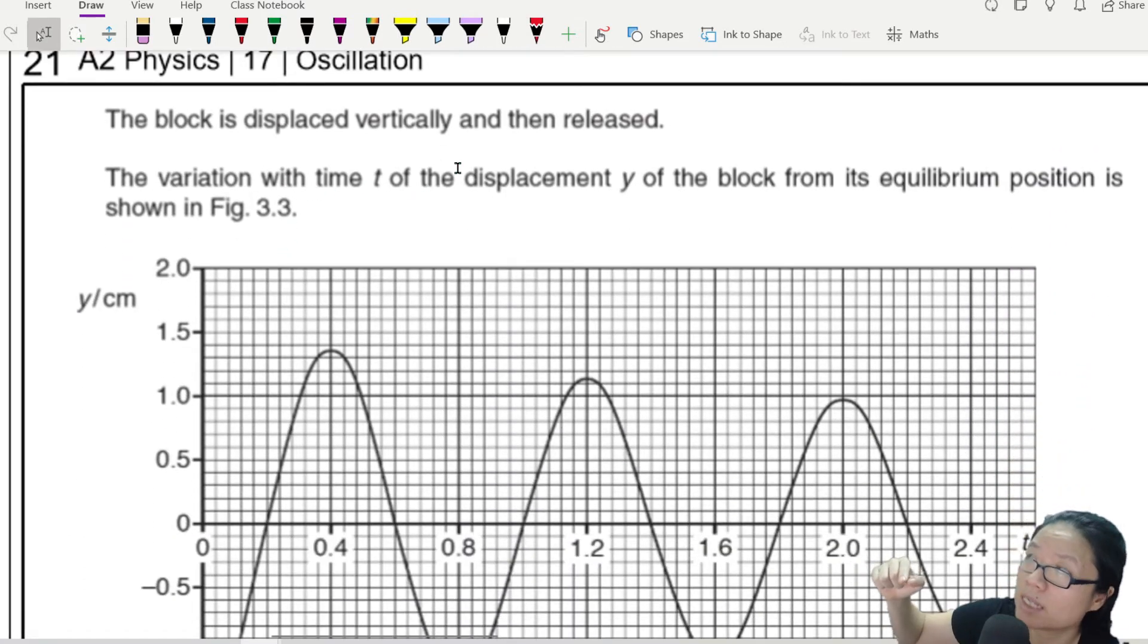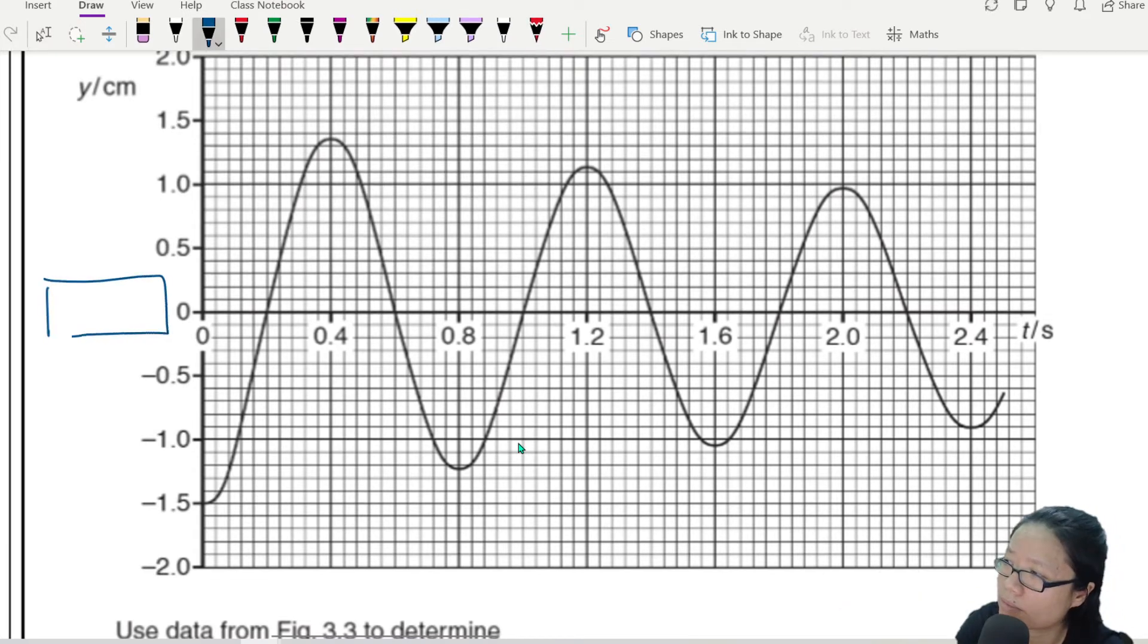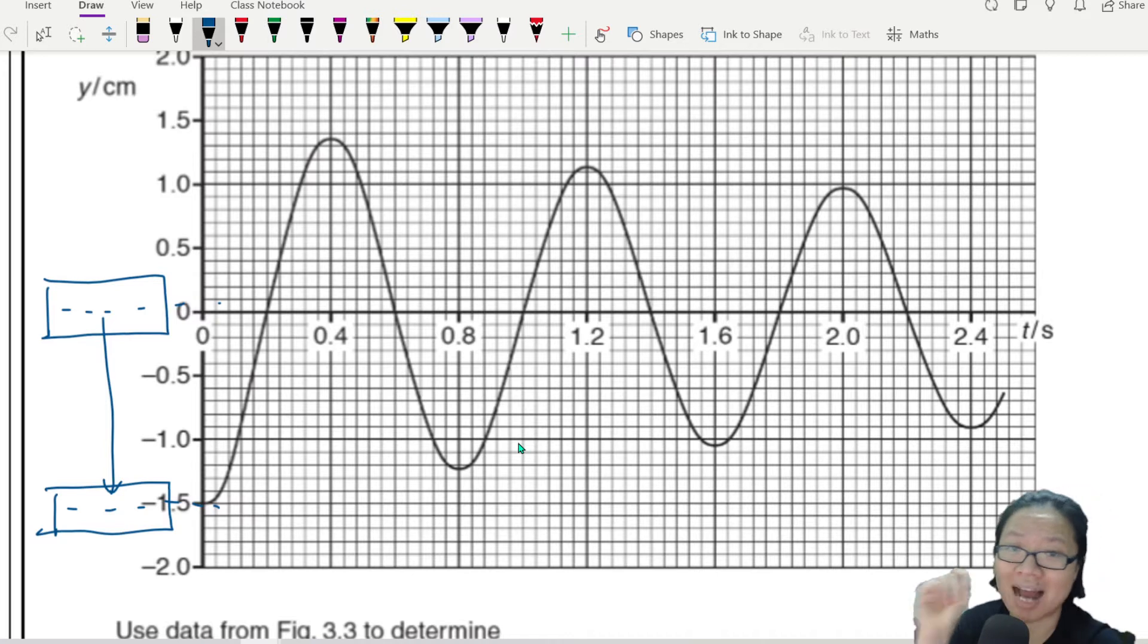The block is displaced vertically and then released. So maybe we push down the block a little bit. So the block, if you don't disturb the block, the block is here. But you disturb the block by pushing it down. So now the block is here. When you push down the block, you increase the up thrust. You displace more water. So because of that larger up thrust, the block will begin to accelerate upwards.